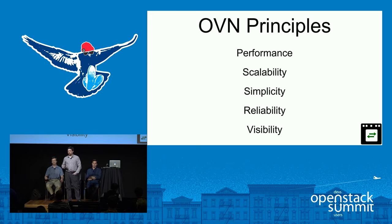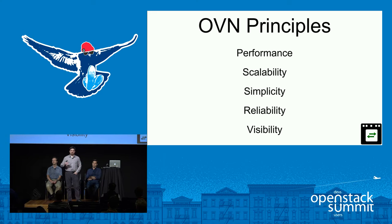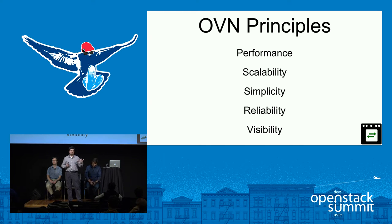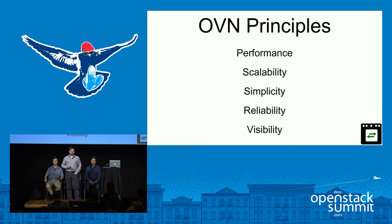Scalability has been key — targeting not just hundreds of hypervisors, but thousands. This is also incredibly important for the container space, where the density of containers on a given node is much higher and the rate of change is much higher. Simplicity, reliability, and visibility are also core principles. As networking becomes more complicated, it's critically important to give you tools to understand what's happening in the network, including tracing packets as they traverse all of OVN across multiple hypervisors.